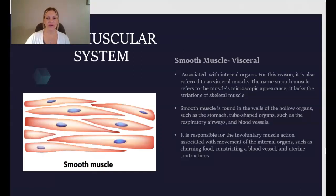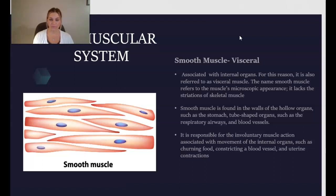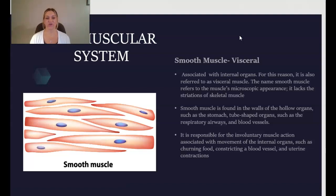Moving on to smooth muscle, or visceral muscle. These muscles are associated with your internal organs, which is why it is also referred to as visceral muscle. The name smooth muscle refers to its microscopic appearance — it is very smooth and lacks the striations of skeletal and cardiac muscle. Smooth muscle is found in the walls of hollow organs such as the stomach, respiratory airways, and blood vessels. It is responsible for involuntary muscle actions associated with movement of internal organs such as digestion, moving food through the intestines and stomach, constricting blood vessels, and uterine contractions.